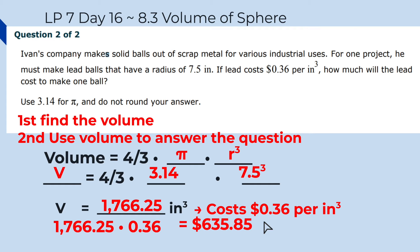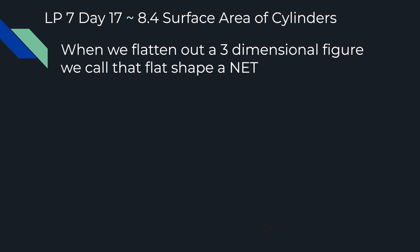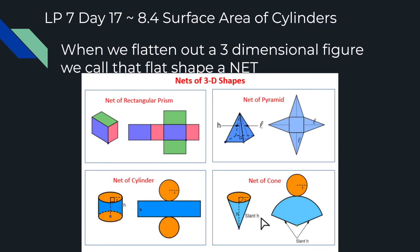Now we're going to look at one more piece, which is actually for day 17 but has been moved forward so you can start on it. We're going to look at the surface area of a cylinder. When we flatten out a three-dimensional figure, we call that flat shape a net. For a rectangular prism, unfolded you get four rectangles and two smaller sides. For a cube, you'd have six squares the same size. For a pyramid — a square pyramid — you have the square base in the middle and four triangles folded down, one for each side.